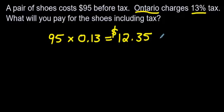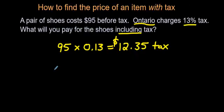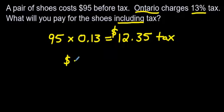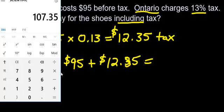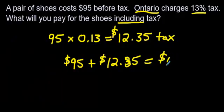It would be a mistake to stop here because this is how much tax we're paying. But the question said, what will you pay for the shoes, including tax? So we take $95, which is the original amount for the shoes, and we add on what we found was the tax, which was $12.35. And if we add those two up on a calculator or in our head, we get $107.35.